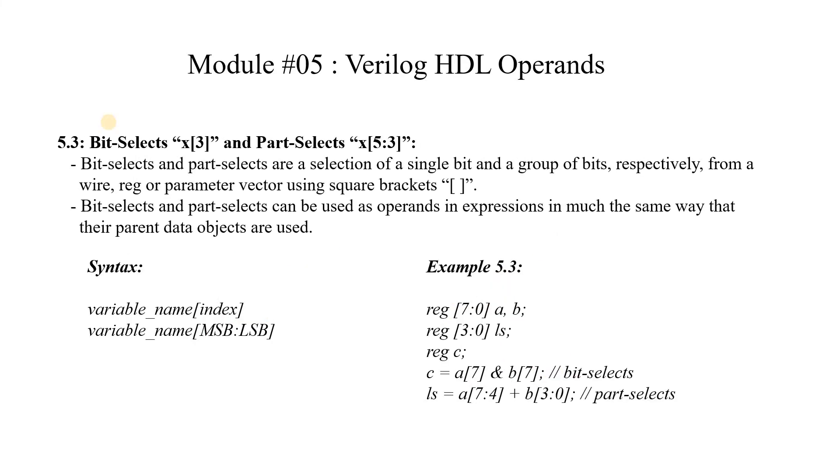Now let's see the third type of operands which are bit-selects or part-selects. A specific bit in a vector signal can be treated as an operand and a part of that signal can also be treated as an operand, and that can be type of wire, register or parameters. The syntax is variable name and a particular bit, or a specific part of that operand.